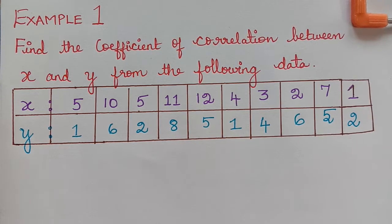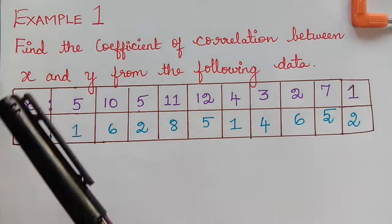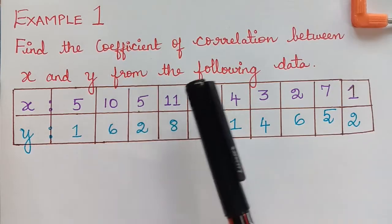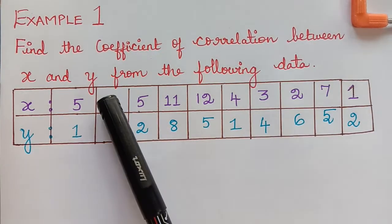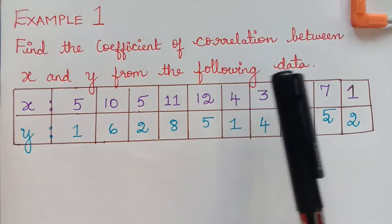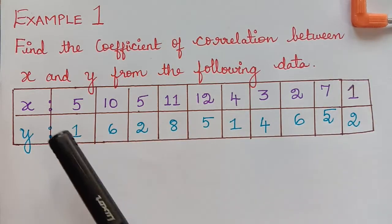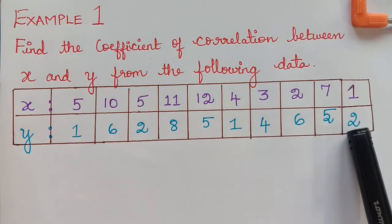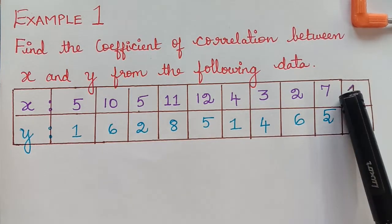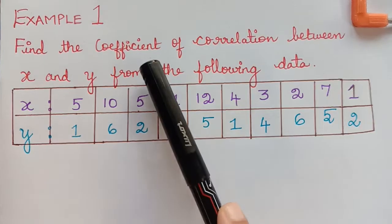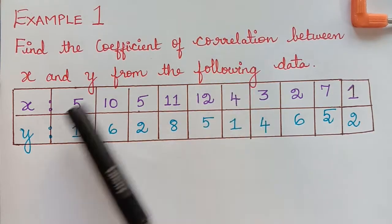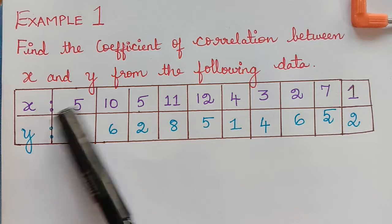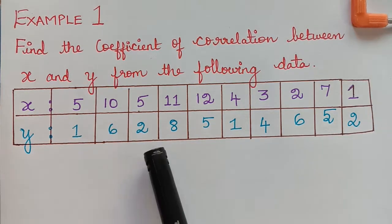Dear students, under the topic of correlation, we are going to solve the first problem. The question is: find the coefficient of correlation between X and Y from the following data. A set of values of X and Y are given, and using these values we have to find the coefficient of correlation between the variables X and Y.